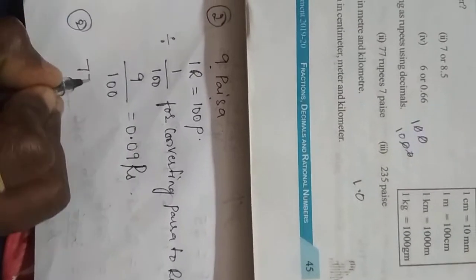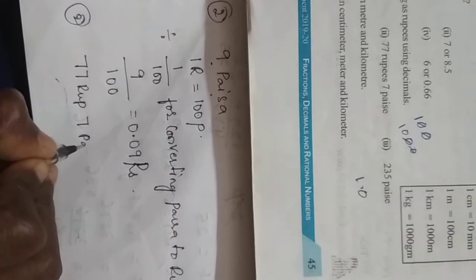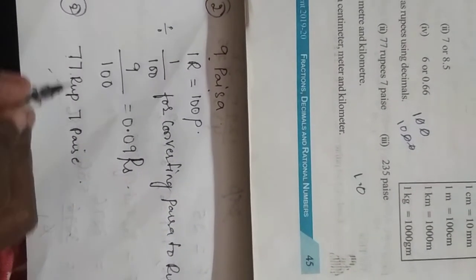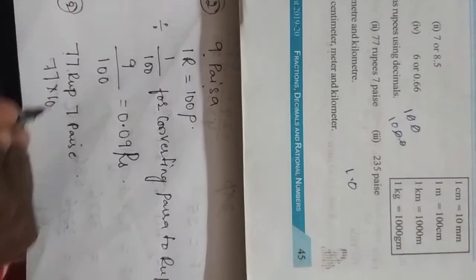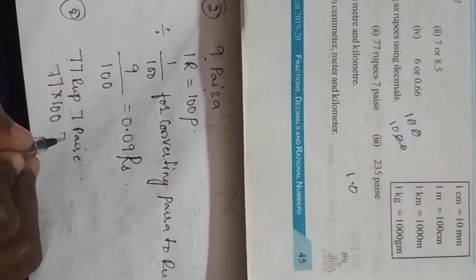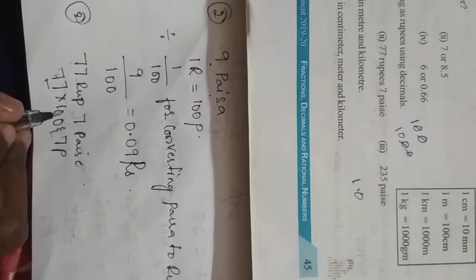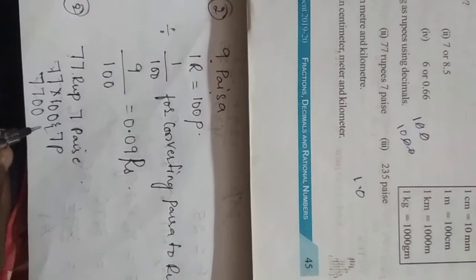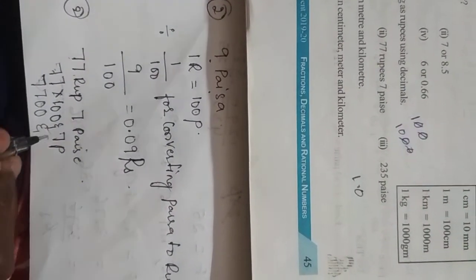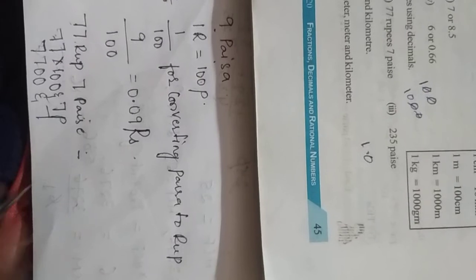Next one: 77 rupees 7 paisa. How you will write? 77 rupees means 77 into 100, right? And 7 paisa. Why am I multiplying by 100? Why am I converting it to paisa? 7700 and 7. How you will write this one?